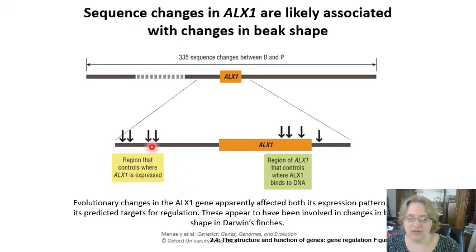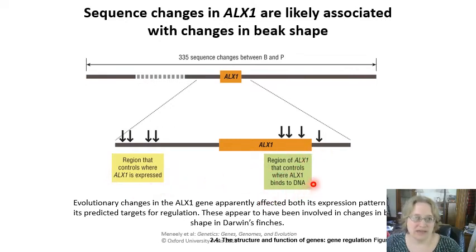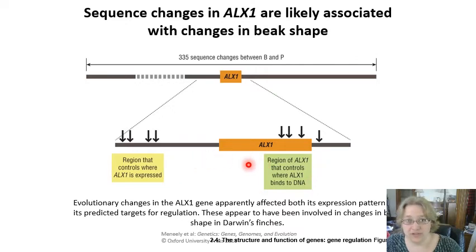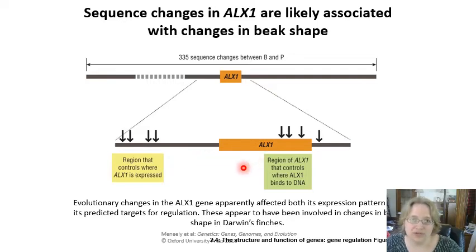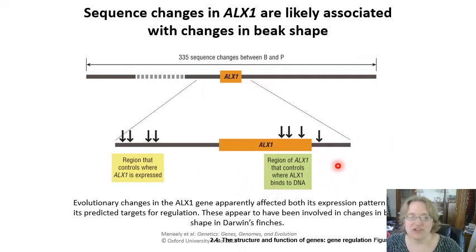There's a region that controls where this particular gene is expressed and a region that controls where it binds to DNA. By changing the structure of this gene in the DNA, you change the protein structure of that transcription factor, which has a cascading effect on these organisms, changing the phenotype — in this case, beak shape.